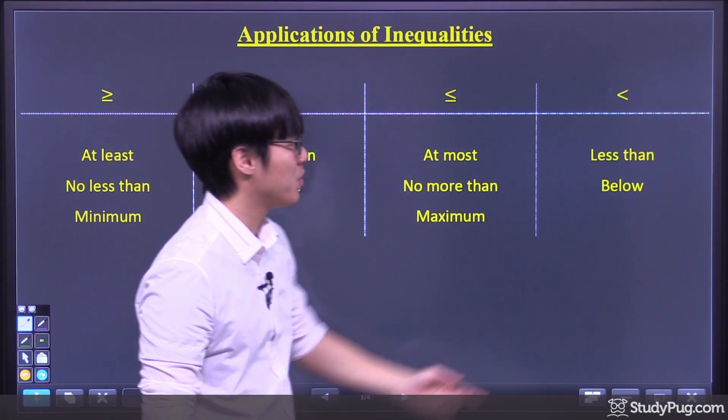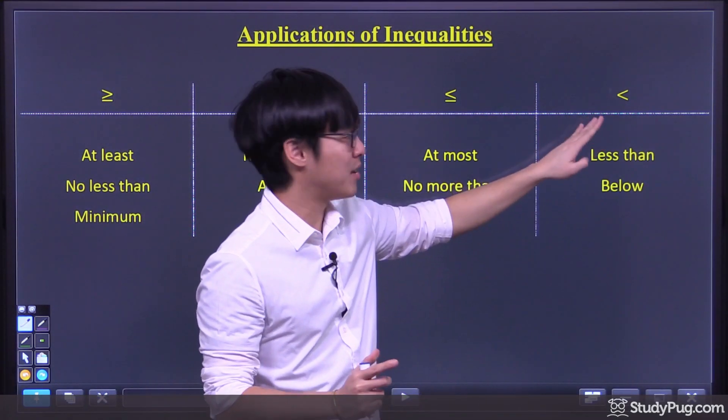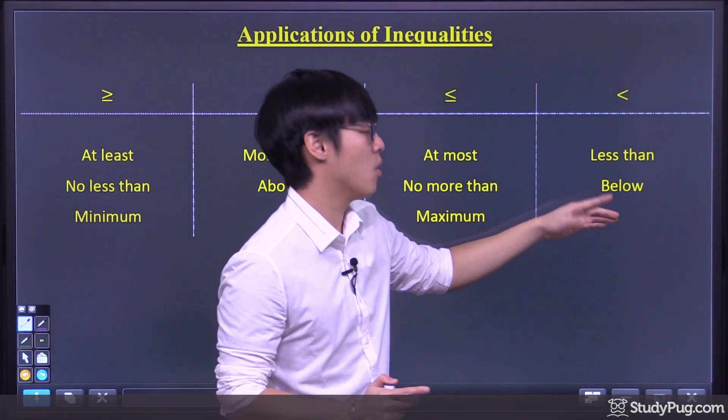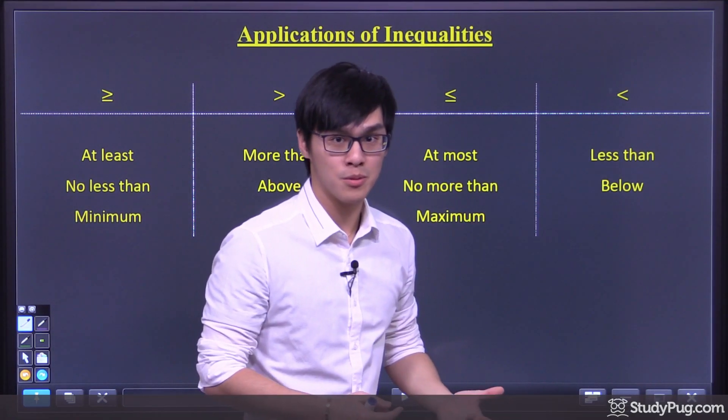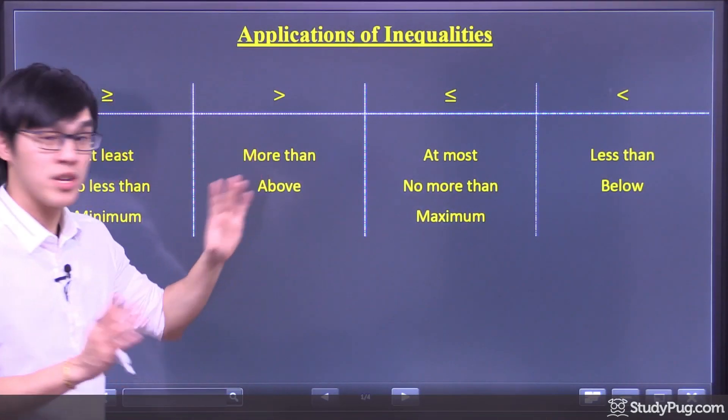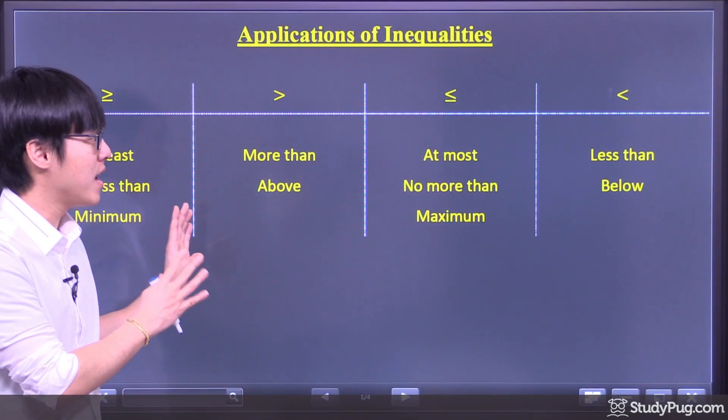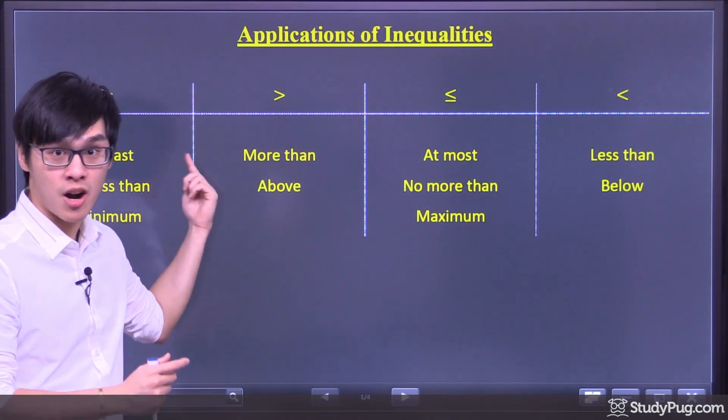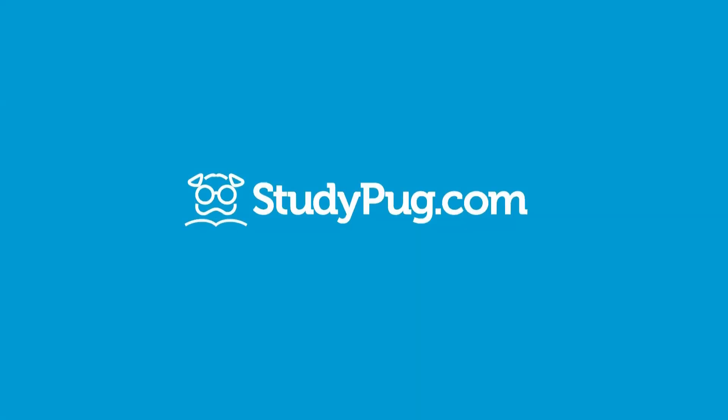And last but not least, we have the symbol less than, and we like to use less than or below to denote this symbol. So let's work on some problems. And whenever we see these keywords, we can always refer back to this table and check which symbol we're talking about, right? So let's go.